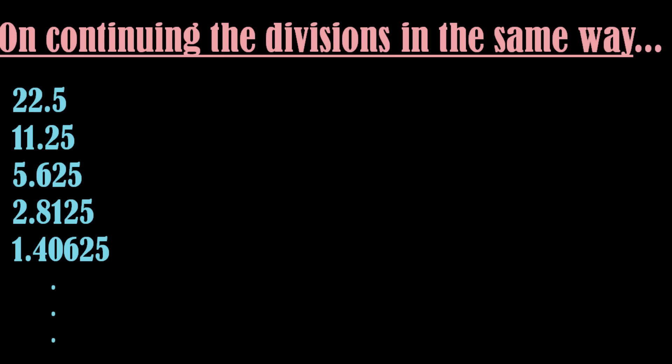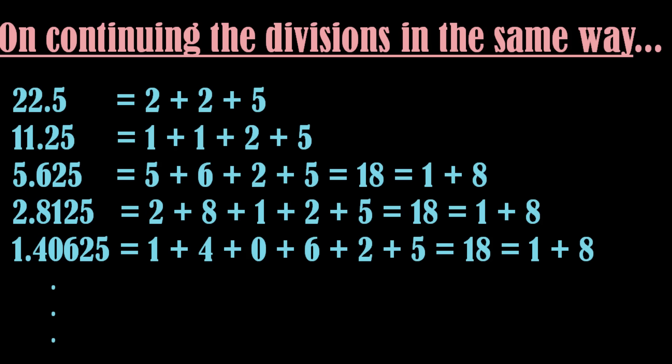Repeat the same process and we will get 9 as the digital root. Now see what will happen if we keep on dividing the circle in half repeatedly. Unbelievably, you will get number 9 as the digital root every time even on repeating the same process infinite times.